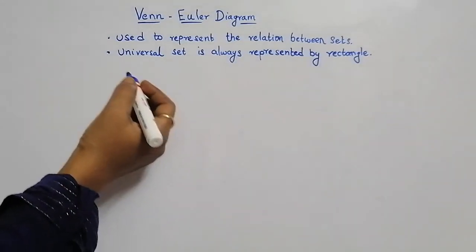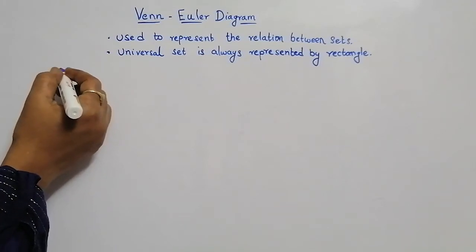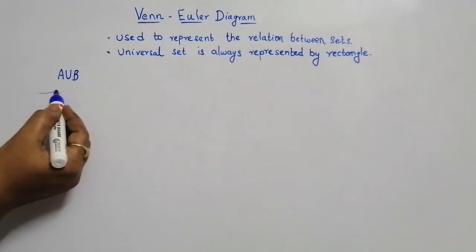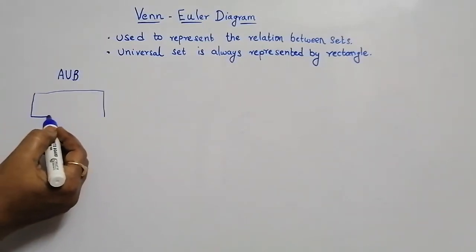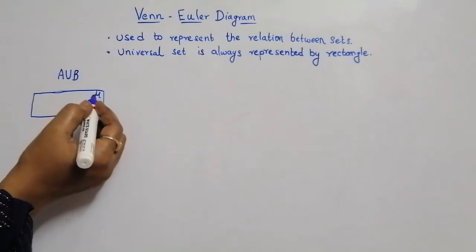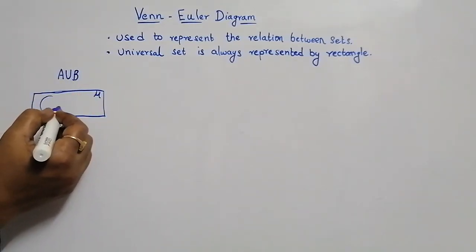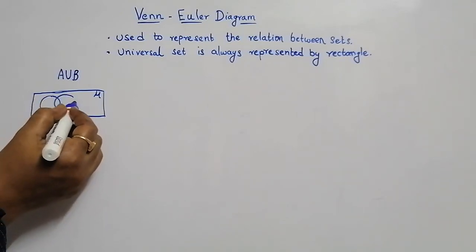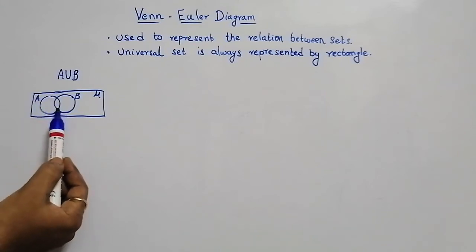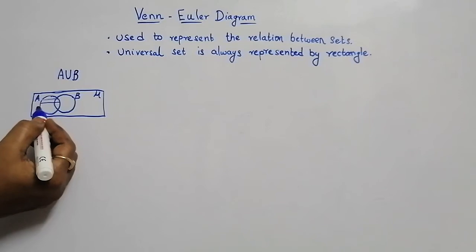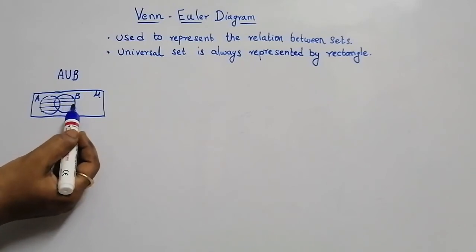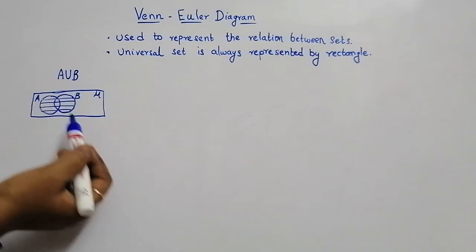First let us see about A union B. We have a rectangle here — this rectangle is our universal set U. Within this we have two sets, set A and set B, represented with circles. Union means all the elements of A and all the elements of B — shade the total A set and the total B set. This is the diagram for A union B.